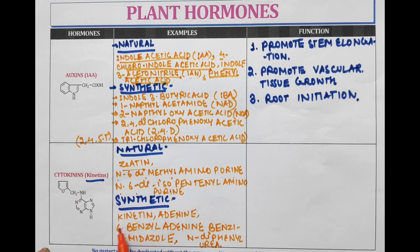Synthetic cytokinins are: Kinetin, Adenine, 6-Benzylaminopurine (6-BA), Benzimidazole, and N-diphenylurea.